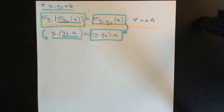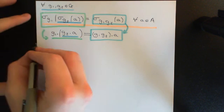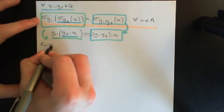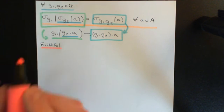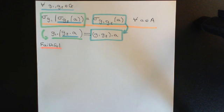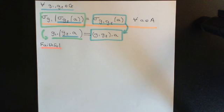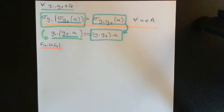I want to introduce a piece of nomenclature: a group action by group G on set A is called a faithful group action if different elements of the group are always associated with different set permutations of A. In a non-faithful group action, different elements of the group may correspond to the exact same set permutation of A. We will explore this concept in much more detail in the next video.